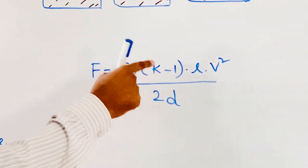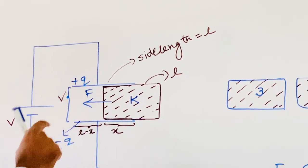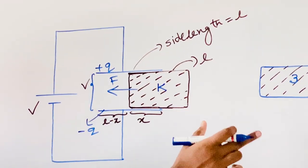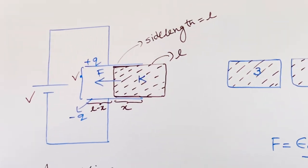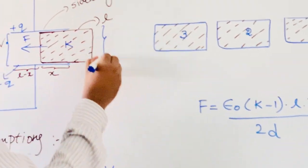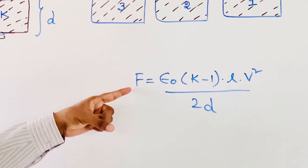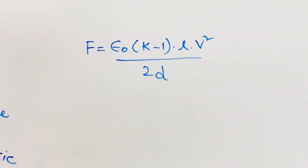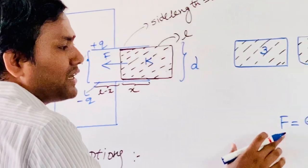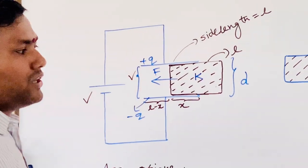Recalling the terms: F is the constant electrostatic force acting on the dielectric slab. ε₀ is the permittivity constant. K is the dielectric constant. L is the side length of the square capacitor plate — we are assuming the plates are square in shape. V is the voltage across the plates, and D is the distance between the plates. This force is constant in nature regardless of how much of the dielectric is inside the plates, as long as constant potential is maintained.